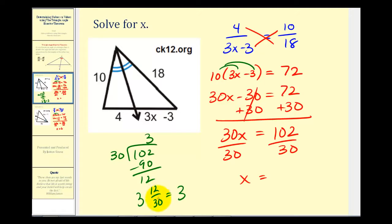And these both have a common factor of 6. There are two sixes in 12 and five sixes in 30. So X is equal to 3 and 2 fifths.